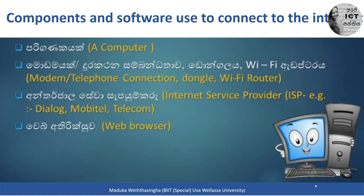Let's learn what components and software we need to connect to the internet. The main thing is a device — it may be a computer, laptop, tablet, or smartphone. Then we need a modem, router, or dongle. We also need an ISP, which is an internet service provider, such as Mobitel, Dialog, SLT, or ART. Finally, we need a web browser.